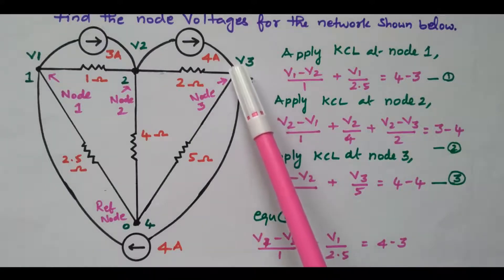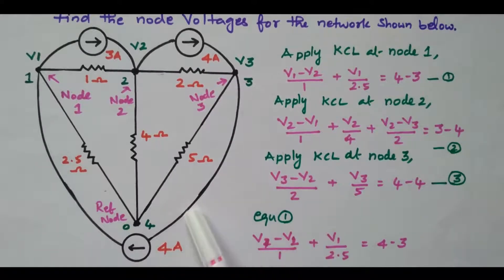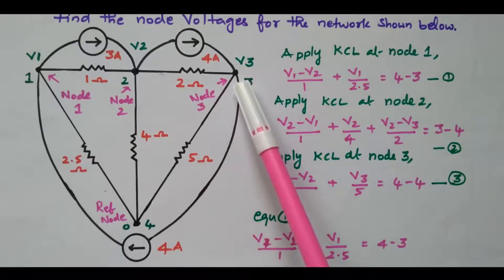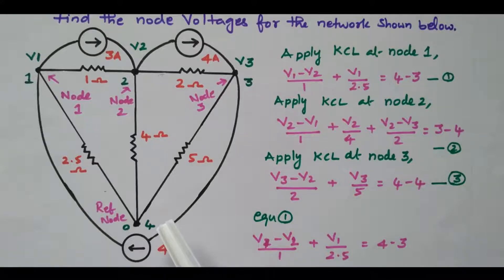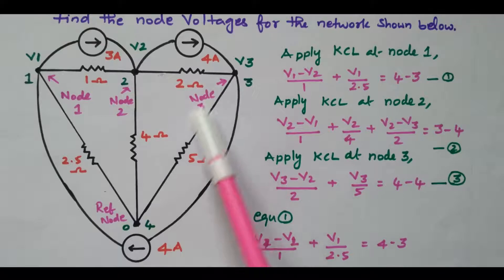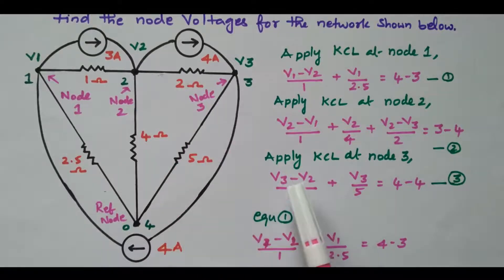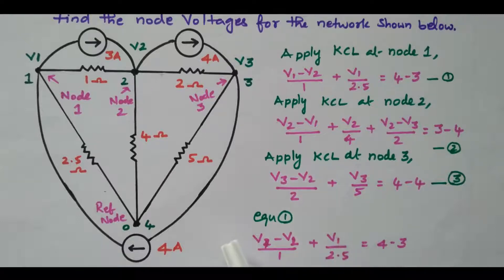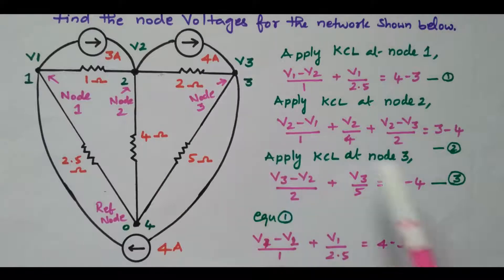Now we apply Kirchhoff's current law to the third node. One 4 A source is coming towards node 3, and another 4 A source is going away from node 3. Two resistors are connected: 2 ohm and 5 ohm. The 2 ohm is between node 2 and node 3, giving (V3 − V2)/2. The 5 ohm is between node 3 and the reference node, giving V3/5. So equation 3 is: (V3 − V2)/2 + V3/5 = 4 − 4.